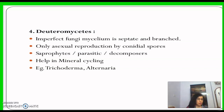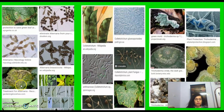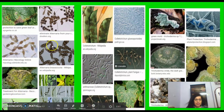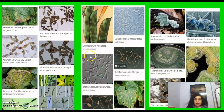Deuteromycetes are saprophytic, parasitic, and decomposers, and they help in mineral cycling — they decompose matter and release minerals into the cycle. Examples are Trichoderma and Colletotrichum.